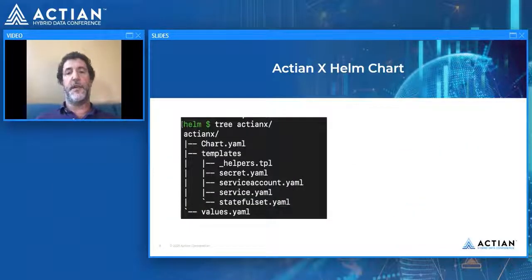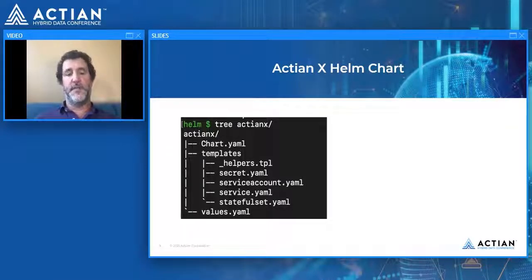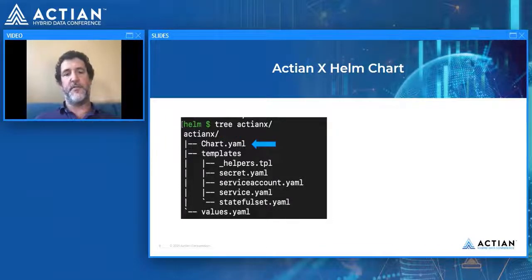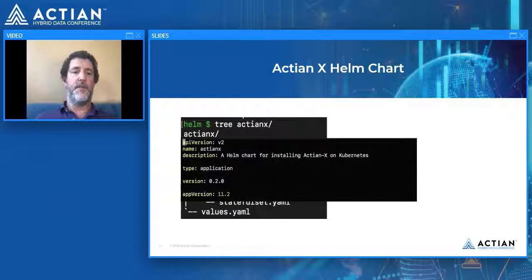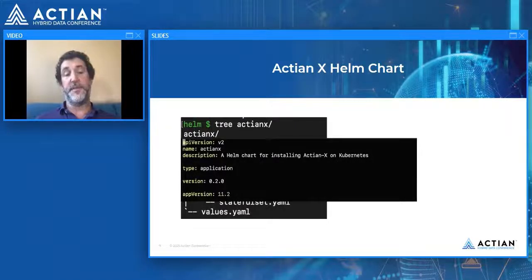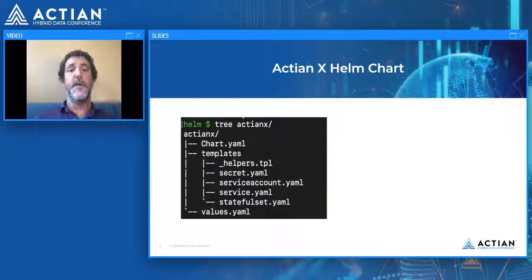Let's take a closer look at what a Helm chart looks like. Here we have an example for ActianX, which has a fairly simple structure. At the top level is a directory named after the chart, ActianX. Then we have a chart.yaml containing basic information: the name, description of the application, which versions are installed, and any dependencies it might have.